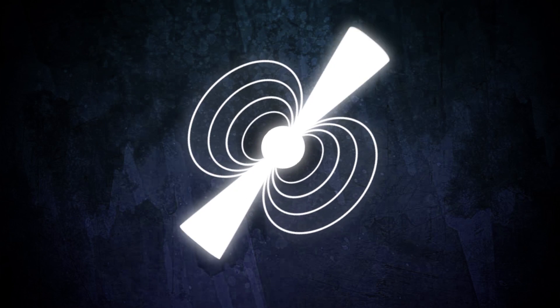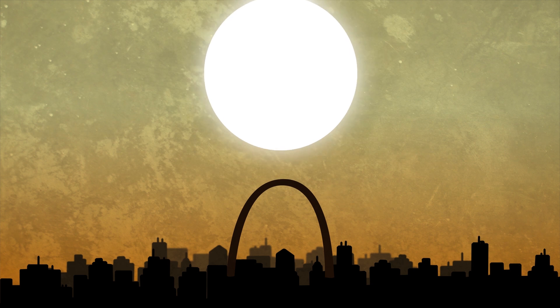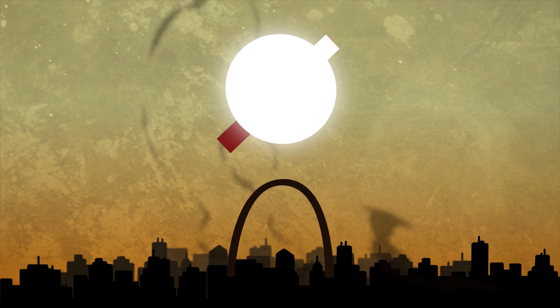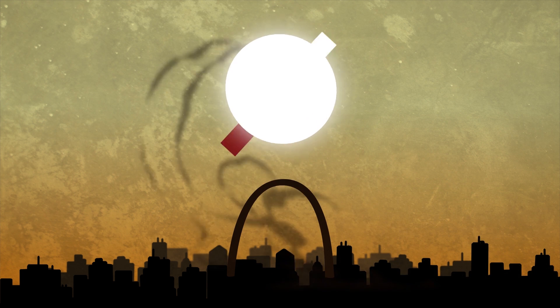Before going ahead, let me first explain what a pulsar is. Imagine our sun were squished to the size of St. Louis and a powerful bar magnet were embedded into it. Furthermore, let's impart a tremendous amount of rotational energy to this object. We have what's known as a pulsar.